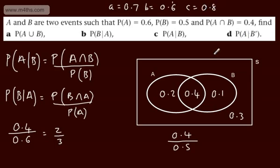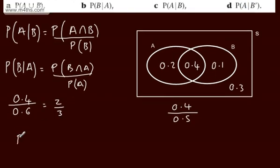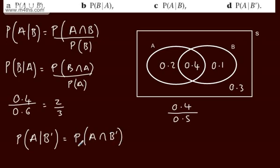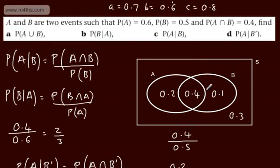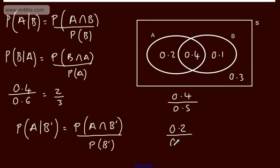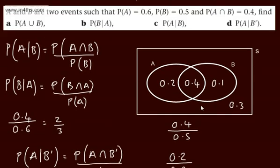The probability of A given not B: the probability of A intersection not B divided by the probability of not B. A intersection not B is just 0.2, and the probability of not B is 0.5, so we get 0.2 over 0.5, which gives us 2 fifths, or 0.4.